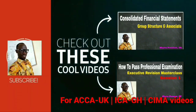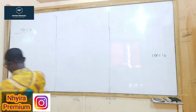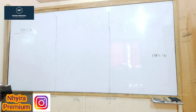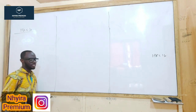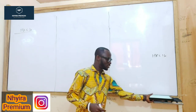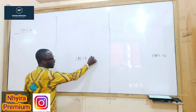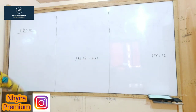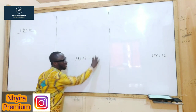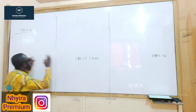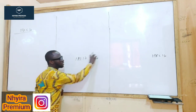Let's look at IFRS 16 Leases. IFRS 16 is a standard that is replacing IAS 17. It became effective in 2019. Under IAS 17, how a lease was accounted for was different.